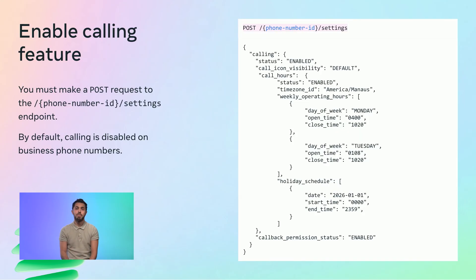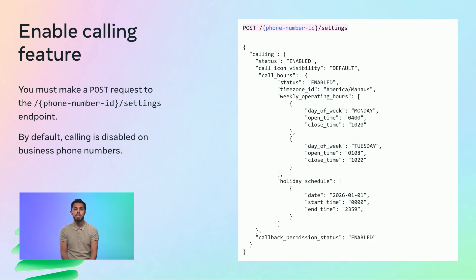Finally, you need to enable the calling feature, which is disabled by default. In order to enable it, you must make a POST request to the slash phone_number_id slash settings endpoint. The business must also have a messaging limit of 1000 business-initiated conversations in a rolling 24-hour period on any of their phone numbers. In the request body, they need to send an object named calling.